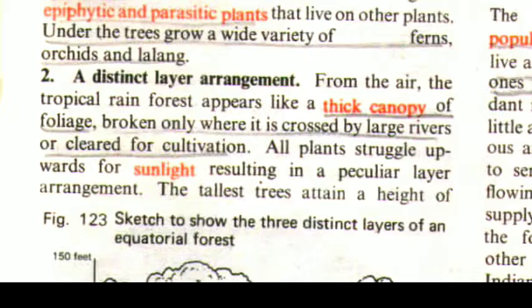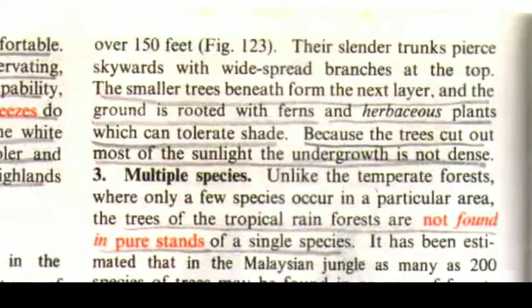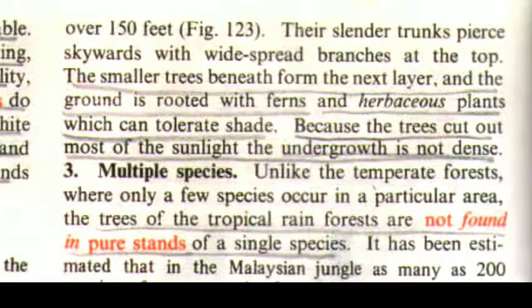The second characteristic feature is a distinct layer arrangement. From the air, the tropical rainforest appears like a thick canopy of foliage, broken only where it is crossed by large rivers or cleared for cultivation. All plants struggle upwards for sunlight, resulting in a peculiar layer arrangement. The tallest trees attain a height of over 150 feet; their slender trunks spear skywards with widespread branches at the top. The smaller trees beneath form the next layer, and the ground is rooted with ferns and herbaceous plants which can tolerate shade. Because the trees cut out most of the sunlight, the undergrowth is not dense.